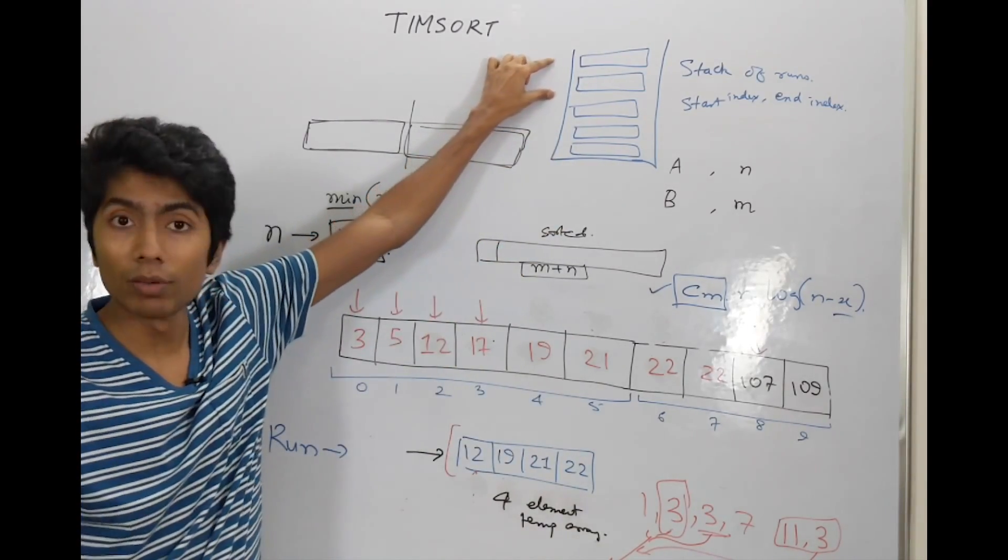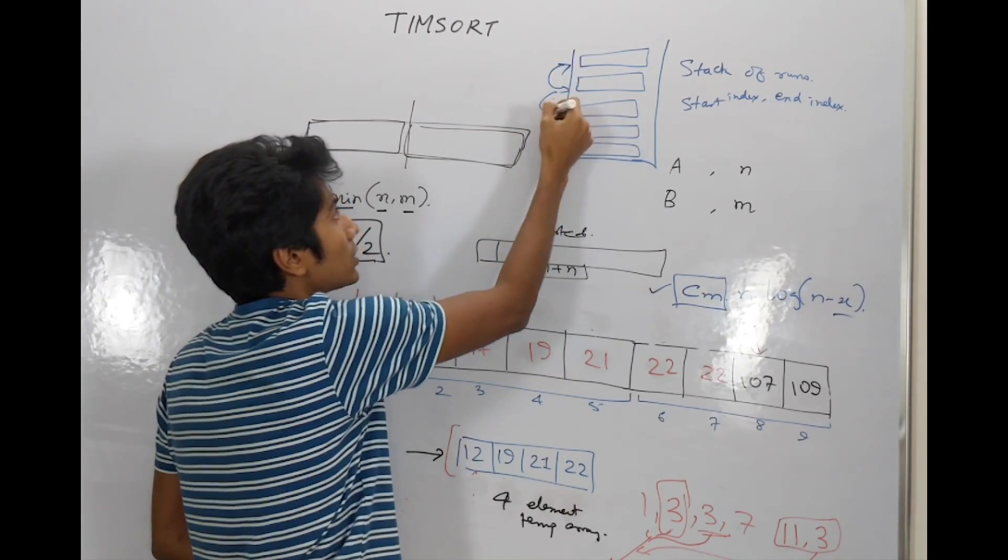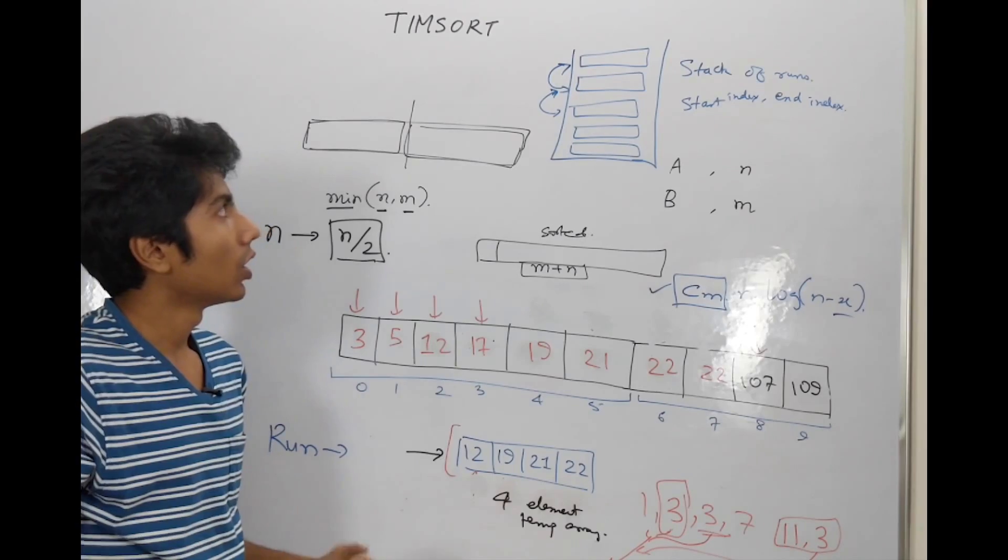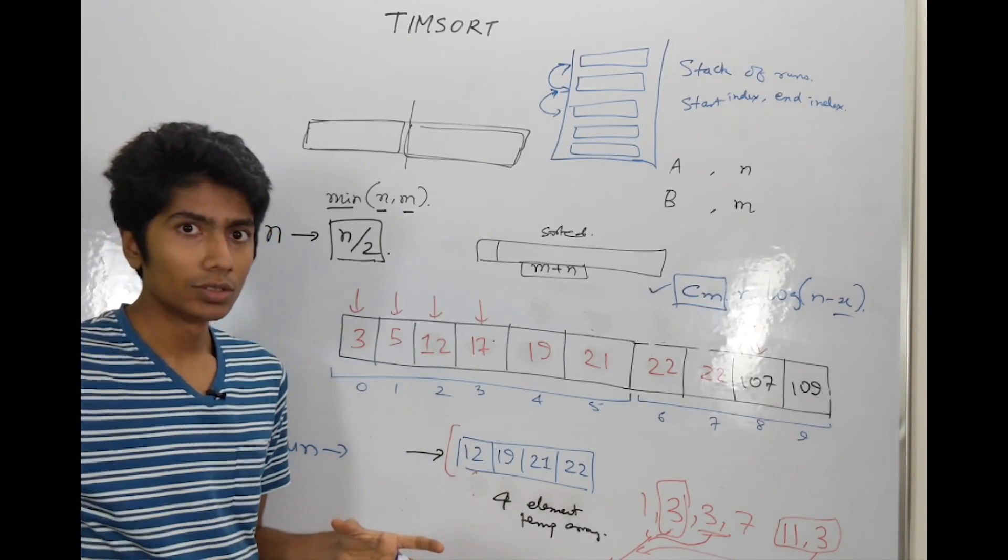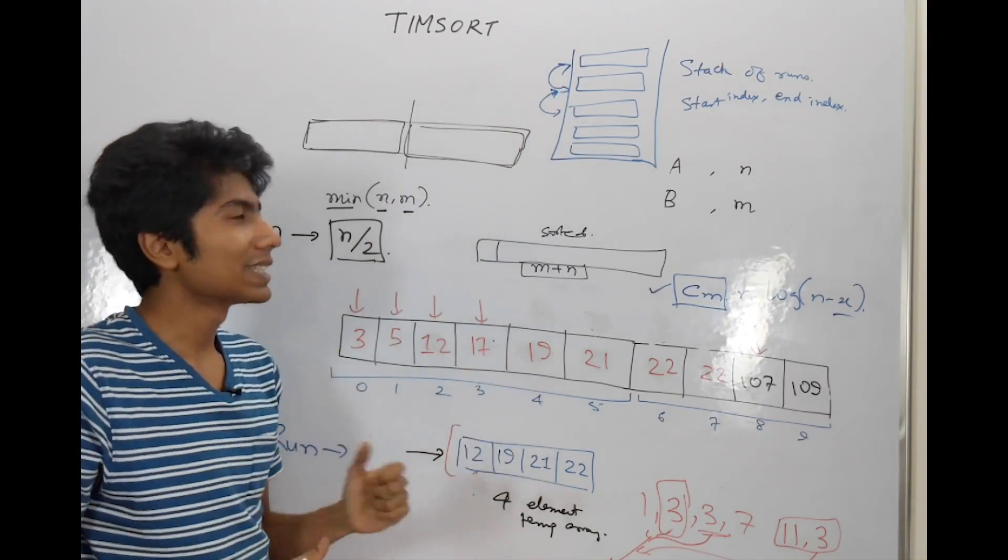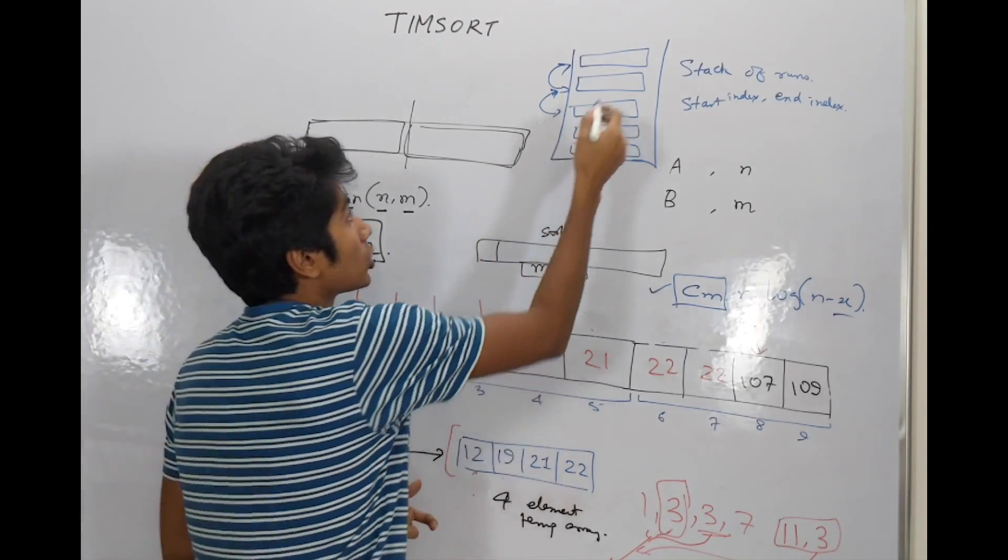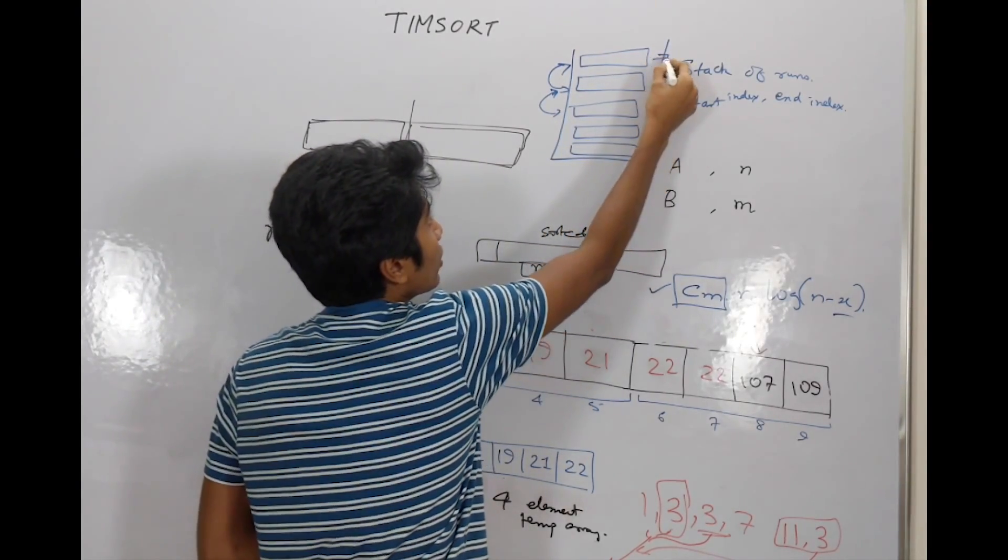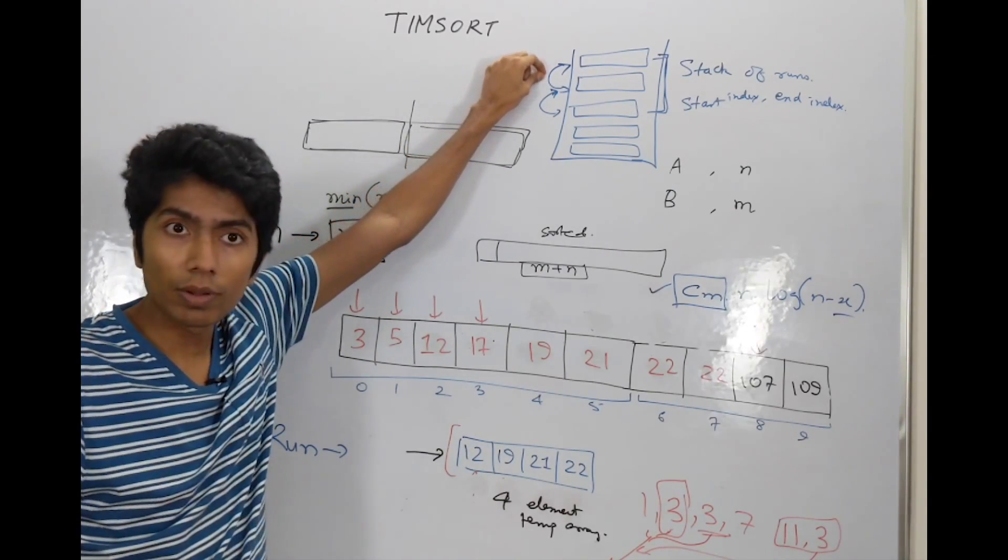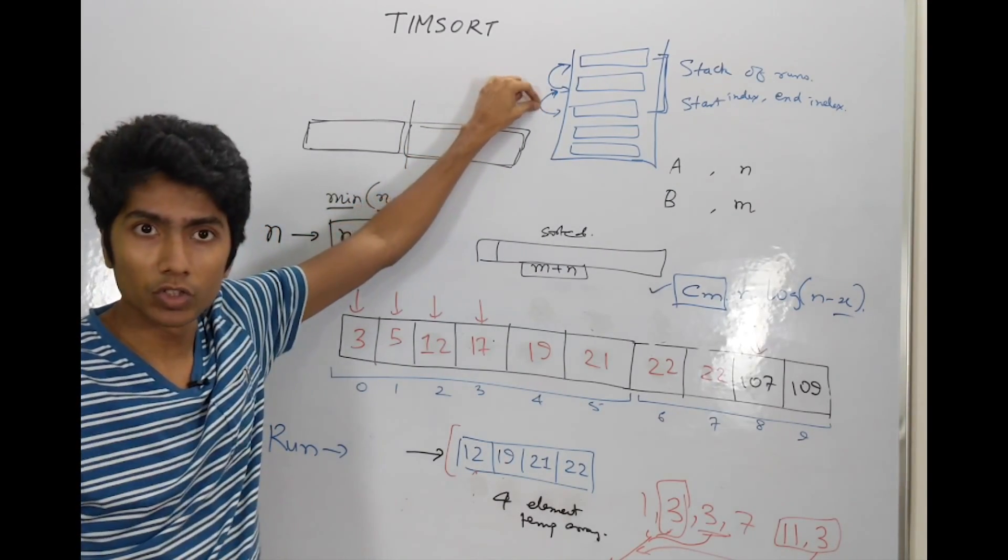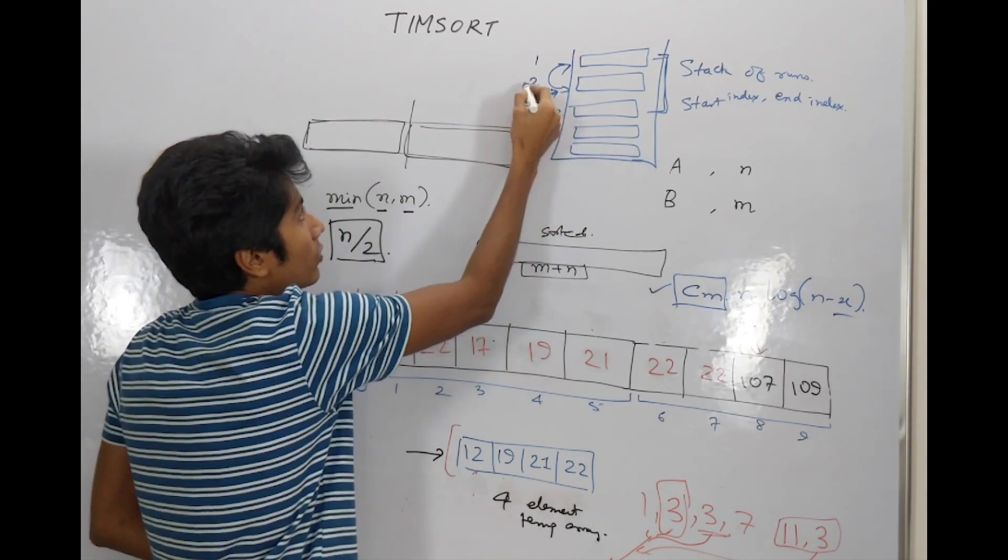And what we're going to be doing in the merge procedure is taking two of these runs, adjacent runs and merging them. Because it's a stack, you can only merge the top two runs. No, this is a special kind of stack that we have built where the top three runs are always taking into consideration. We can merge only adjacent runs, which means these two runs will be merged or these two runs will be merged. So that is the first and second run or second and third run will be merged.